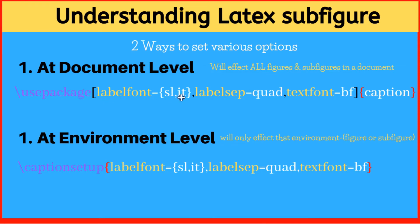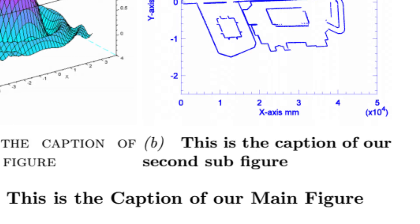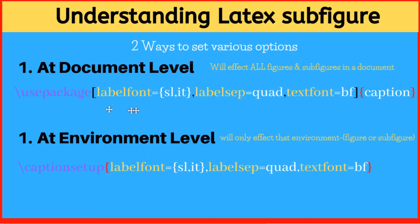You can set more than one option for label font. For example, SL means slanted and IT means italic, as shown earlier where subfigure B had both slanted and italics applied. You only need to learn these two commands for setting options. Once you know the available values, you have complete control over your subfigures and figures inside the LaTeX document.